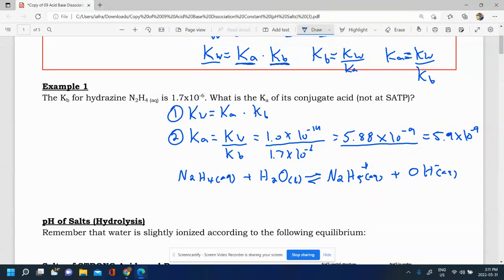And you can make a Kb expression for this. So I'm going to make a Kb expression for this. So we'll say Kb is equal to concentration of OH minus times N2H5 plus over N2H4. So it's a Kb expression because this is acting as a base. And I made OH minus, so I made a Kb expression.